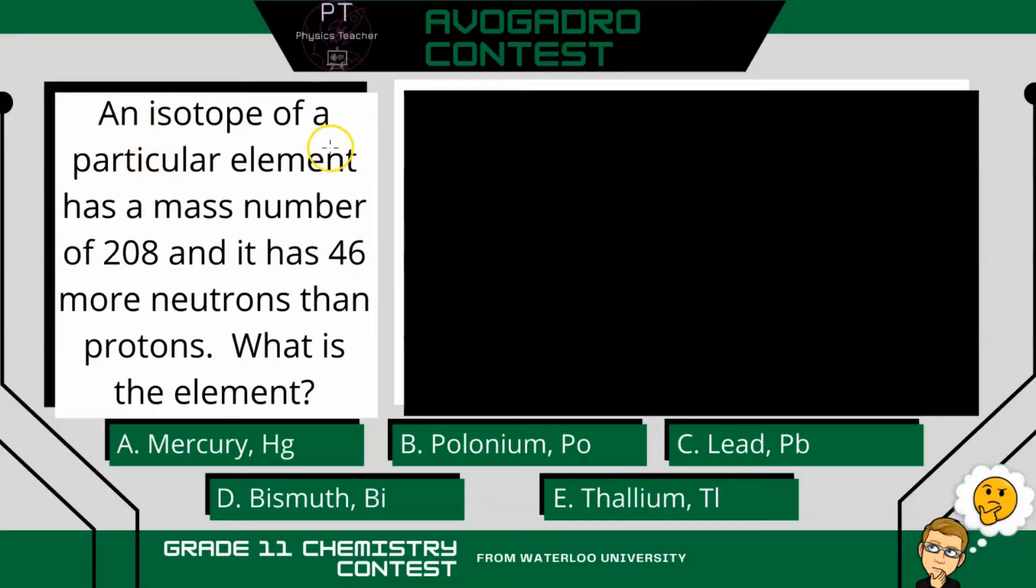Okay, so this is an isotope of a particular element, has a mass number of 208. Remember the mass number is the number of neutrons and protons. So we're going to write a little equation here. It says neutrons and protons equals 208.